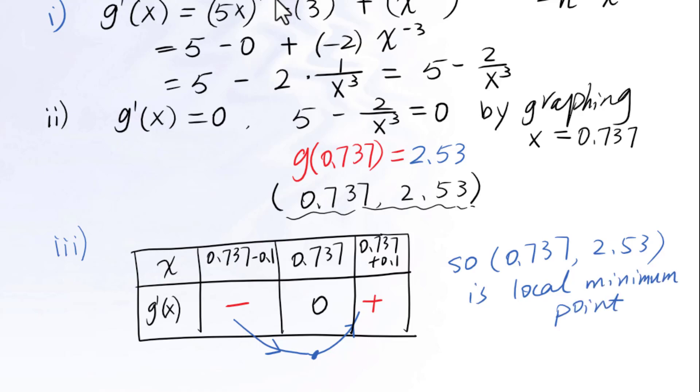Or you can write down 2.53 is the local minimum value. You also can write down local minimum at x equals 0.737. Any of these three forms will be good.